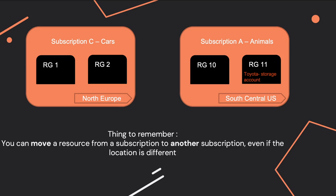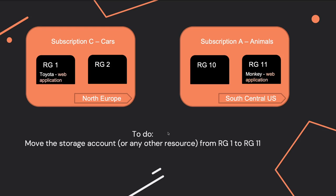There is an exception to that, and I want to show you another scenario. Instead of a storage account, here I have a web application, and I also have another web application in RG11. In this case, can I move the Toyota web app next to the monkey web app? Well, this is not possible, because in the destination resource group there is already a web application. You cannot move App Service resources to a resource group that already contains web resources — this violates Microsoft web rules.